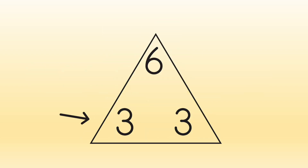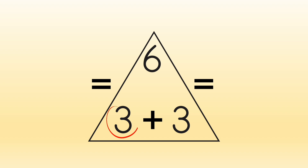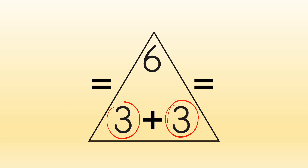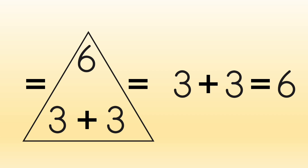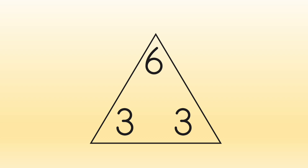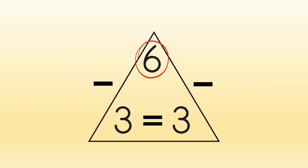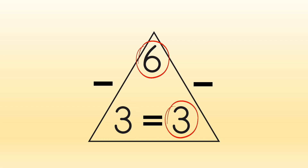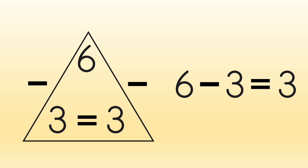When you start at the bottom, go over and up, you get addition facts like this: three plus three equals six. We can see that both addition facts are the same so we will only list it once. And when you start at the top, go down and over, you get subtraction facts: six minus three equals three. Again, both subtraction facts are the same so we will only list it once.